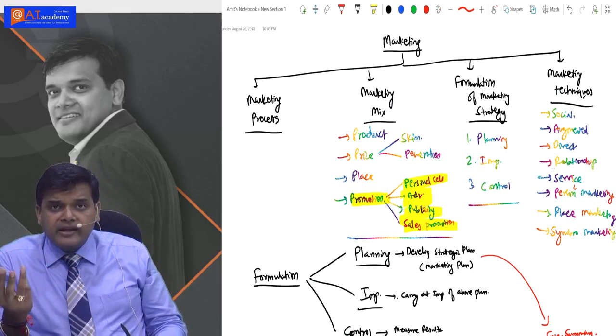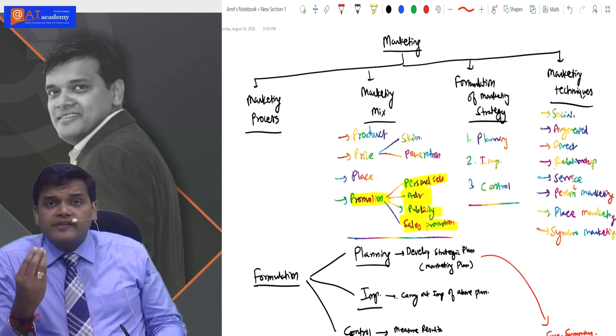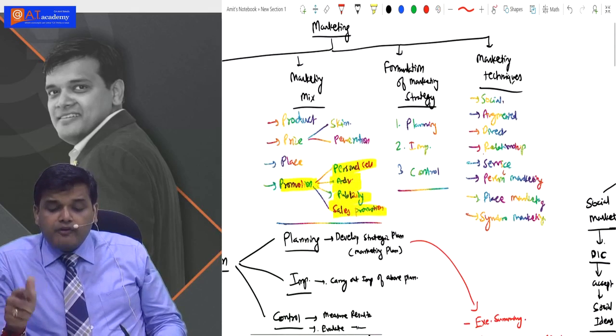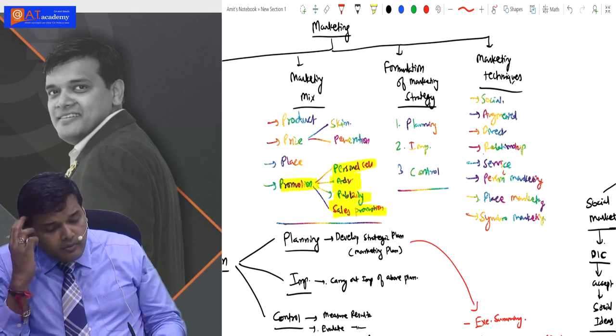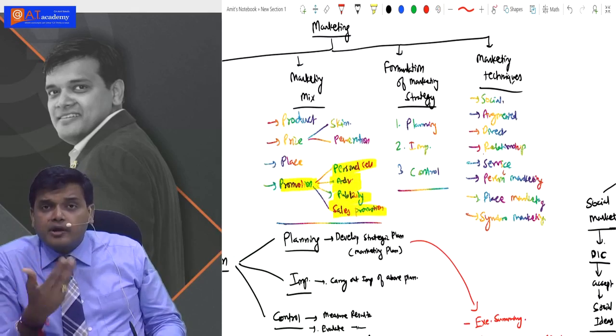The expanded marketing mix has three elements: people, process, and physical evidence. After this, we saw formulation of marketing strategy, which has three components: planning, implementation, and control.